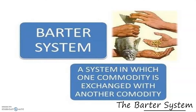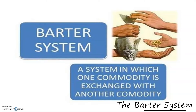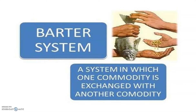This will take us all the way back to the barter system. The barter system is a system in which one commodity is exchanged with another commodity. According to Wikipedia, barter is a system of exchange where participants in a transaction directly exchange goods or services for other goods or services without using a medium of exchange such as money. This simply meant that goods and services were exchanged for other goods and services — so if you had rice, you could exchange it for fish, or if you had beans, you could exchange beans for rice.